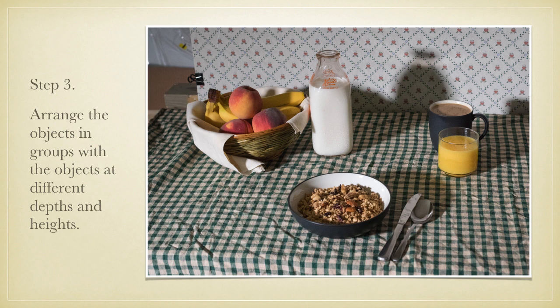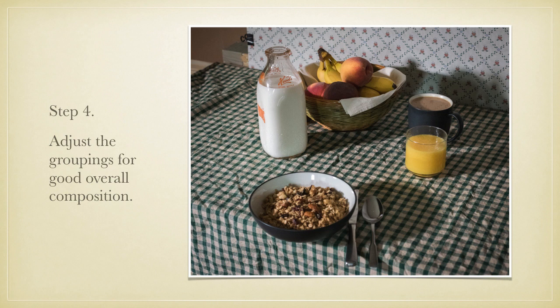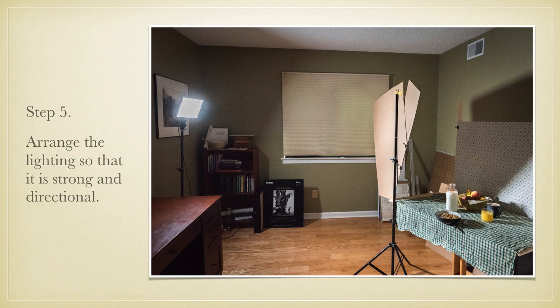Step three is to arrange the objects in groups, with the objects at different depths and heights within the arrangement. Step four is to adjust the groupings for good overall composition. Notice that there are different heights, colors, and textures to the objects, and that they are arranged with a dominant group, a subdominant group, and a subordinate group. Step five is to arrange the lighting so that it's strong and directional. Here you can see the use of a large cardboard flag to cast a dramatic shadow on the background.